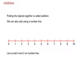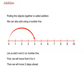Let us add four and two on number line. First we will move from zero to four. Then we will move two steps ahead. We will reach at six. So four plus two is equal to six.